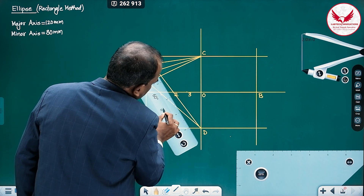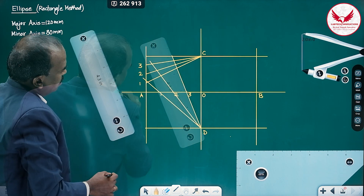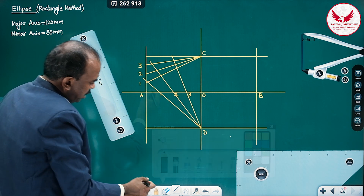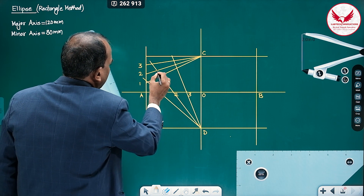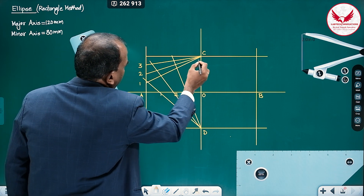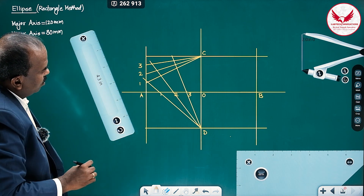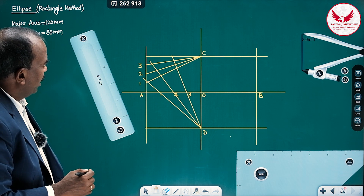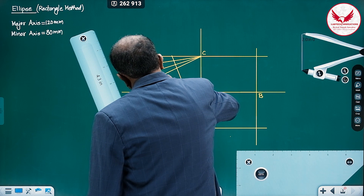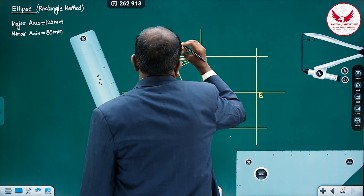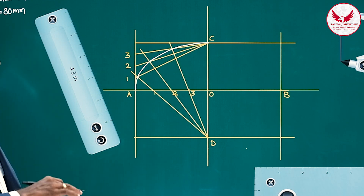At the intersection of line 1 to C and line D to 1, we get point P1. Similarly, intersections of 2 to C and D to 2 give P2, and 3 to C and D to 3 give P3. Along with endpoints C and A, these are 4 points on the ellipse in one quadrant. We can join these points with a smooth curve. In the same procedure, we repeat for the remaining 3 quadrants.